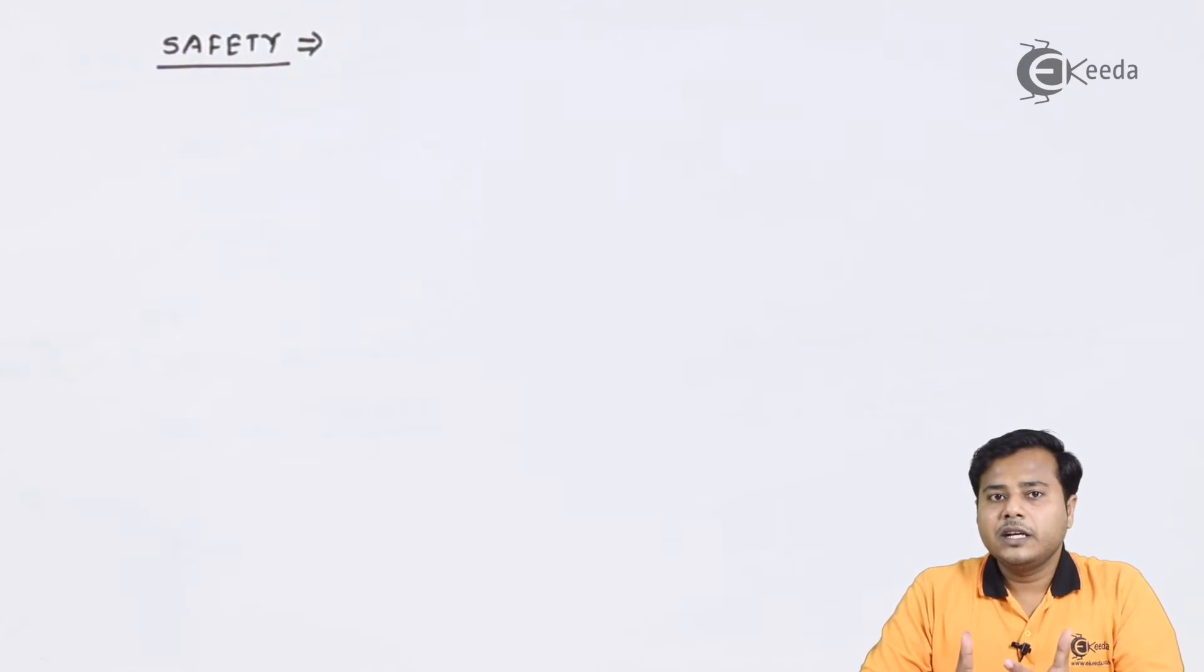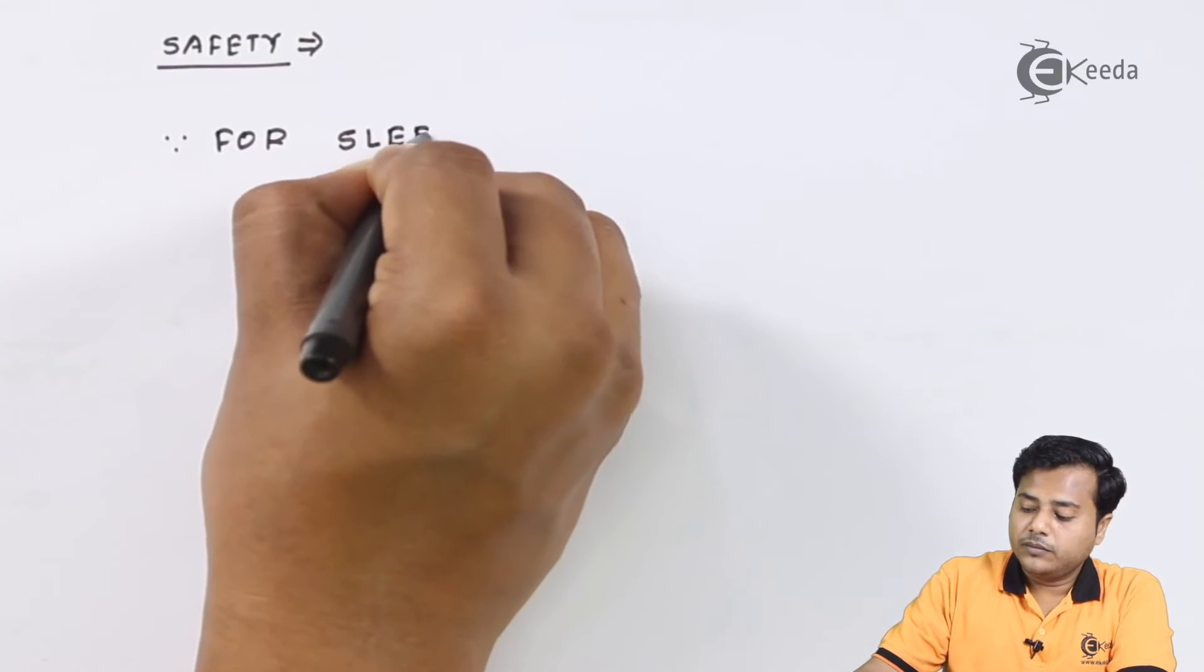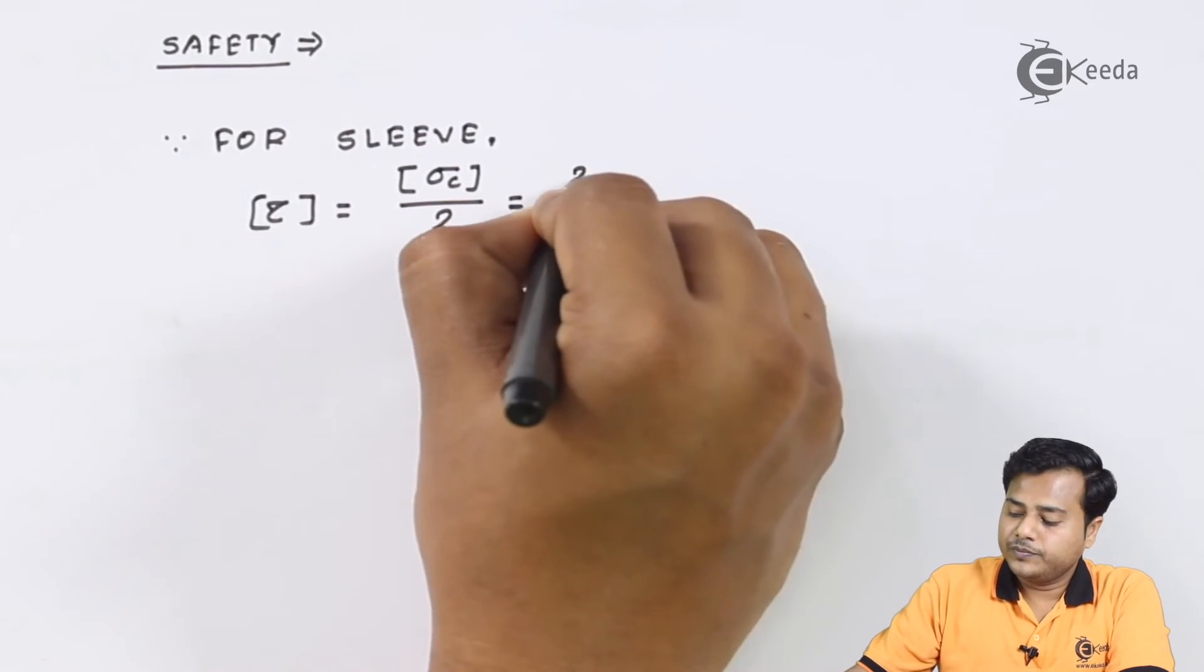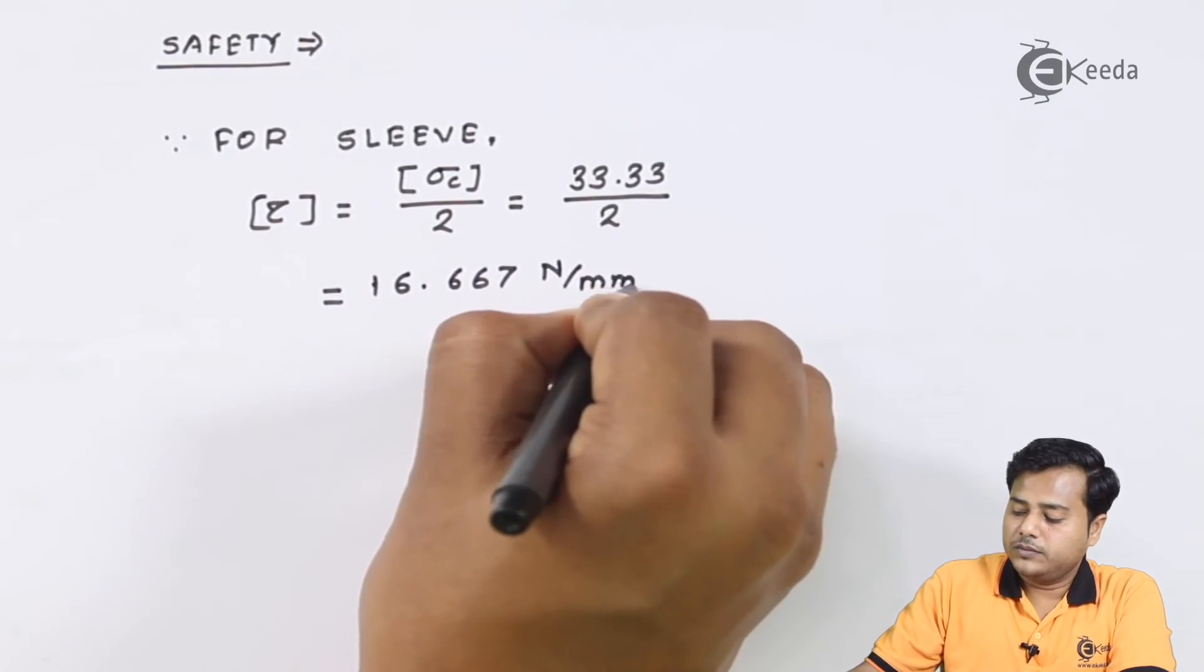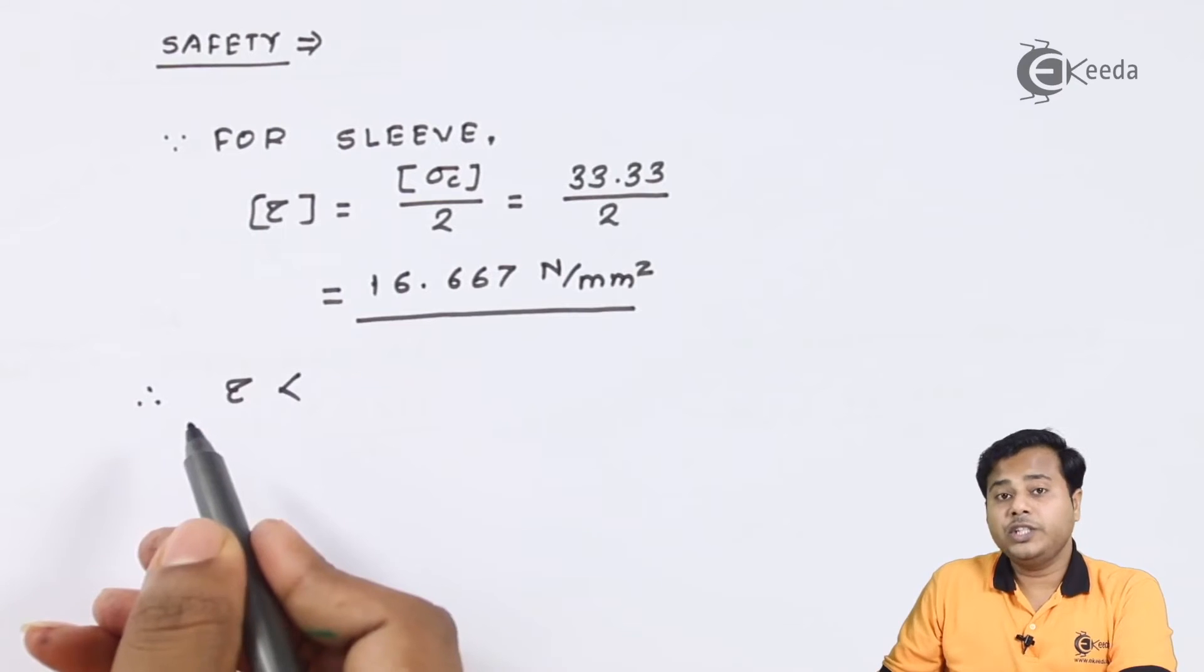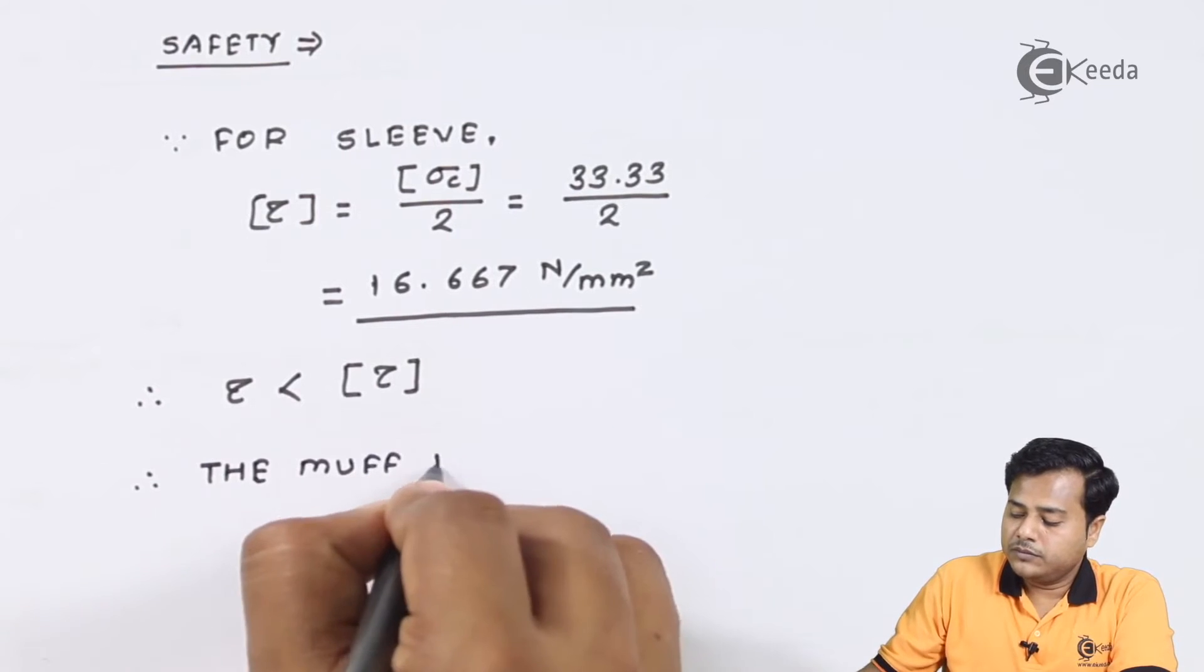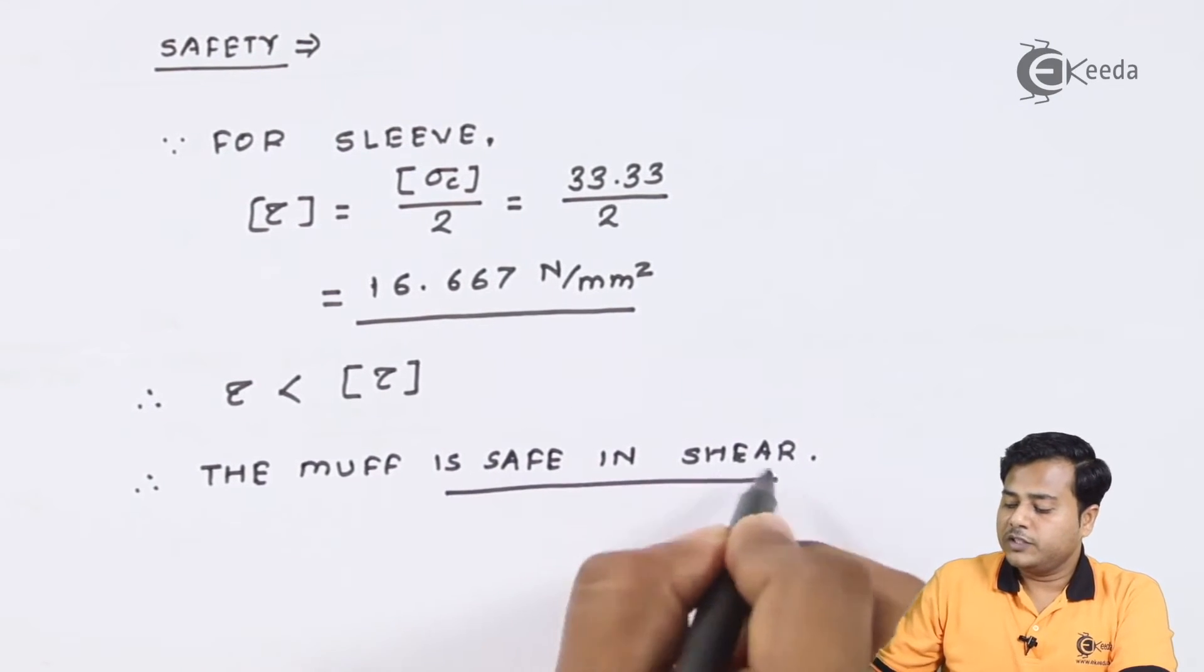Now as far as the safety is concerned let us compare this value with the allowable value. For sleeve, for the given material allowable tau is equal to 50 N/mm². Here it is very clear that the induced shear stress in this case is much much smaller than the allowable value of shear stress and hence we can say that the muff is safe in shear.